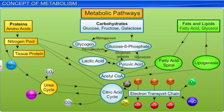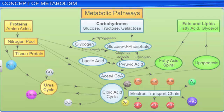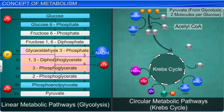These pathways take a specific path and include specific biomolecules. They can be either linear, as in the process of glycolysis, or circular, as in the Krebs cycle.